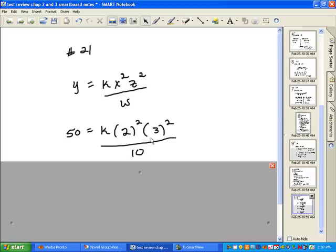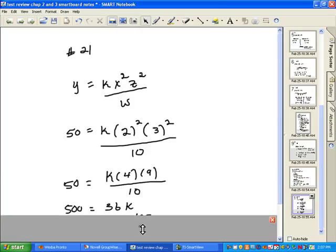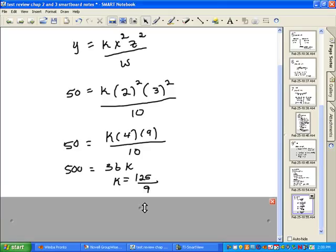So we do the math. 2 squared is 4 and 3 squared is 9. 4 times 9 is 36. So we end up with 500 because we have 50 times 10. That's where we get the 500. Equals 36k. In order to get k by itself, we divide both sides by 36. So k is 125 over 9.